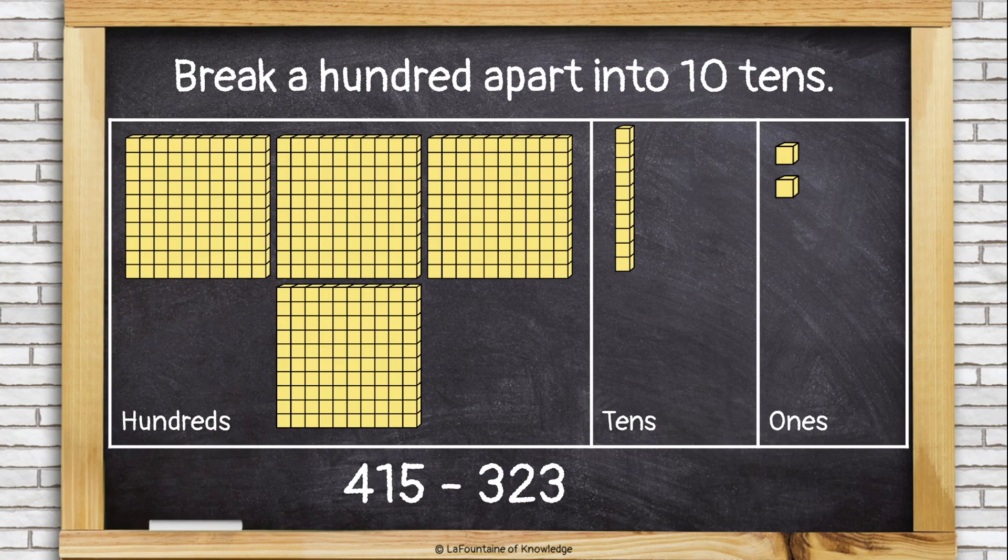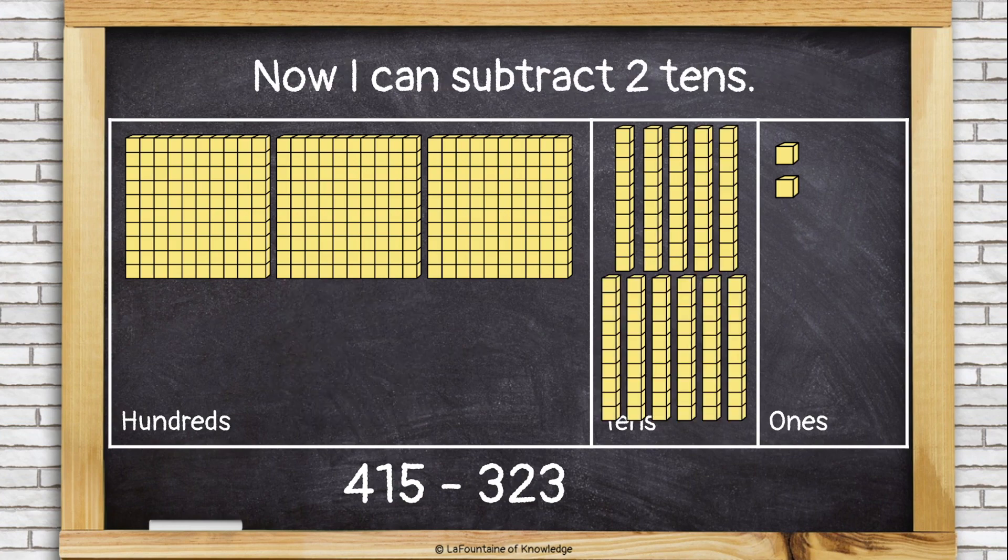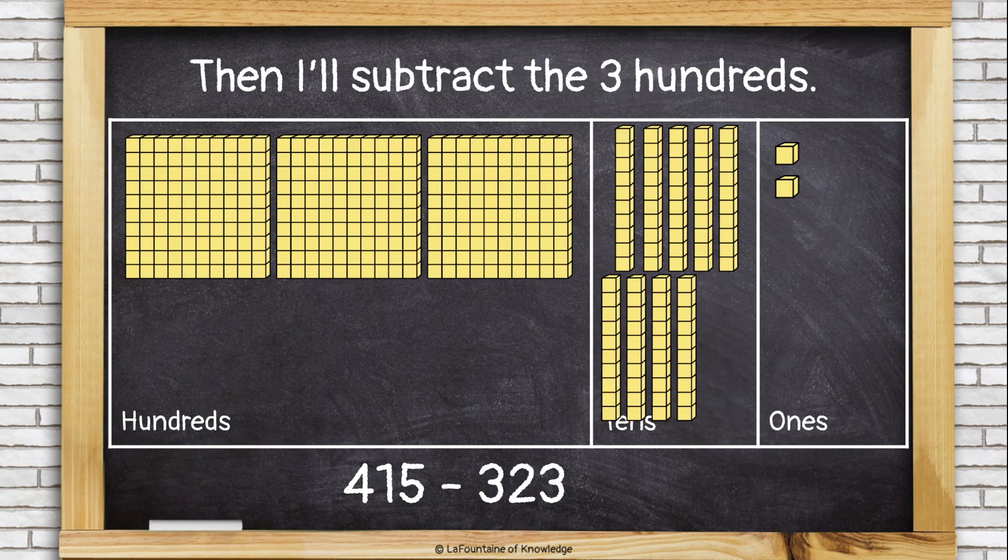I'm going to break one of these hundreds apart into 10 tens. Because that's what 100 is. It's just 10 groups of 10. So I'll take a 100 block. I'll turn it into 10 more tens. Now I can subtract those two tens. Gone.